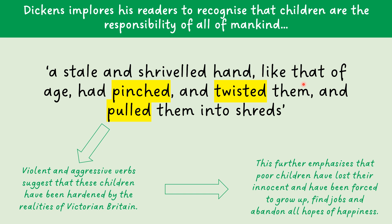If we zoom in, you might decide to focus on the word 'pinched', the word 'twisted', and the word 'pulled', because they are violent and aggressive verbs which suggest that these children have been hardened by the ignorance of society. They've been forced to witness abject horror, squalor and poverty, and therefore they've got no innocence and no hope for the future. So Dickens is emphasising that the children are the responsibility of mankind.